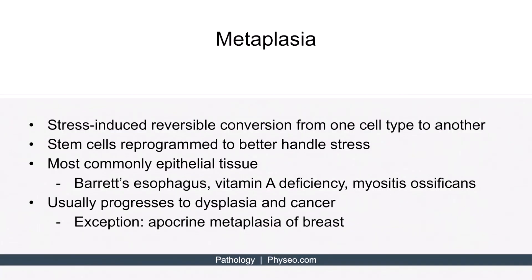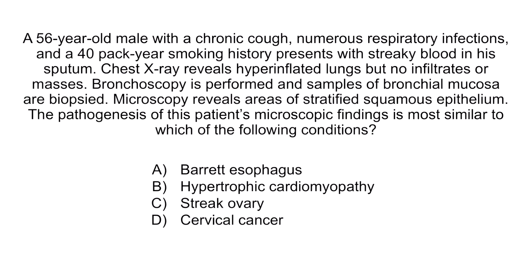Remember that metaplasia is a stress-induced reversible conversion from one cell type to another — in this case, ciliated columnar epithelium to stratified squamous epithelium. B is wrong because hypertrophic cardiomyopathy is an example of hypertrophy. C is wrong because streak ovary is an example of hypoplasia. And D is wrong because cervical cancer is not an example of a growth adaptation, since it's a cancerous process. So again, the correct answer is A, Barrett esophagus. And that concludes this section.